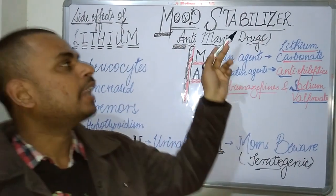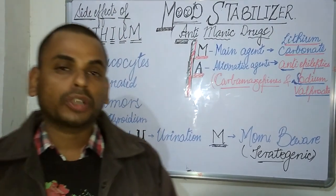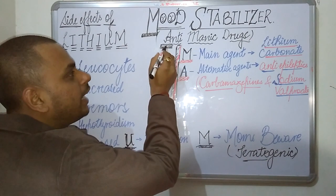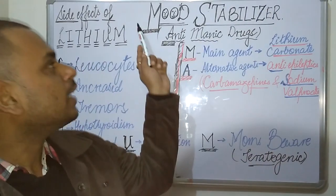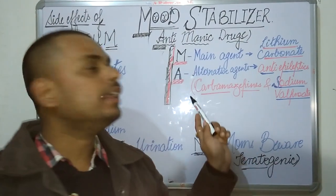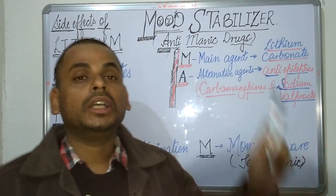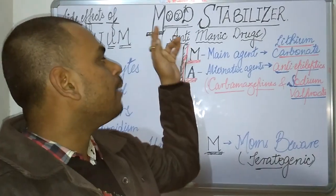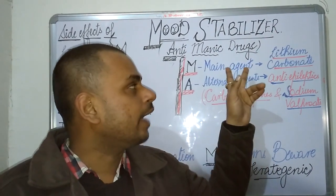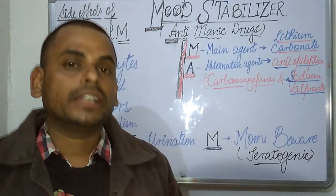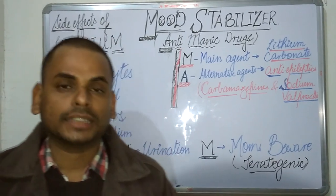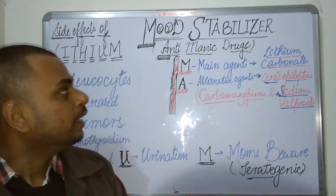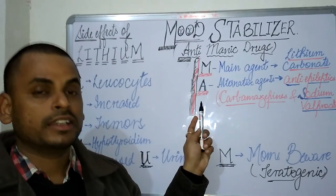When talking about mood stabilizers, I have a mnemonic using the initials of 'MOOD' and 'ANTI-MANIC'. The M of MOOD refers to the main agent, which is lithium carbonate — the most important and widely used mood stabilizer among anti-manic drugs.